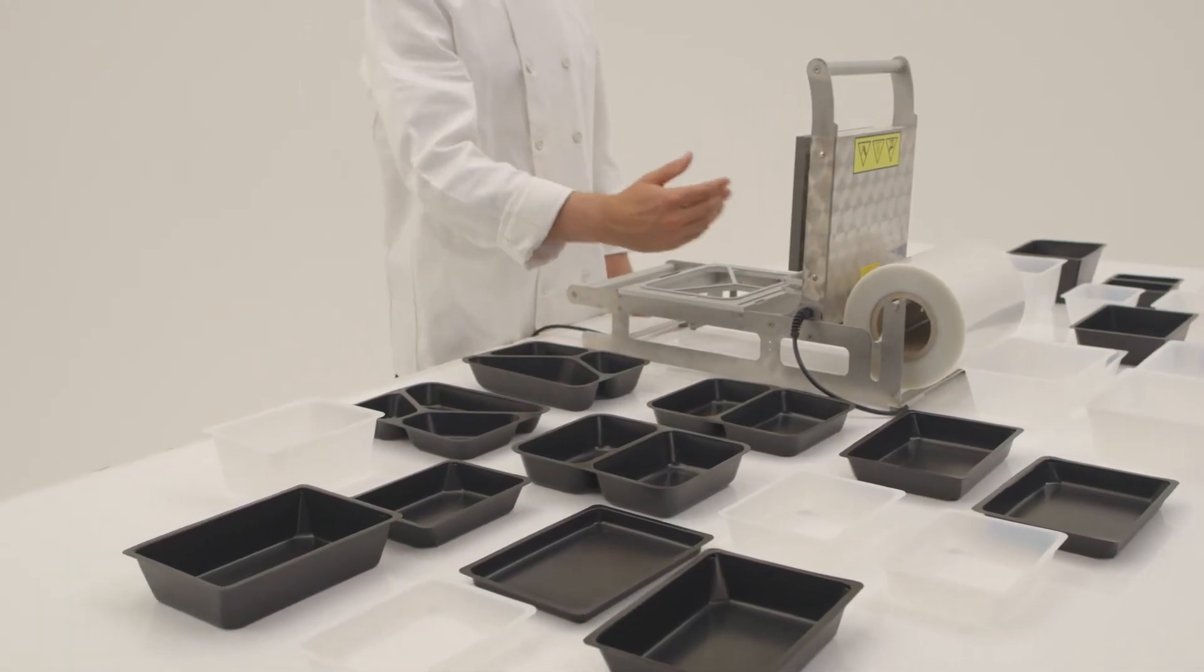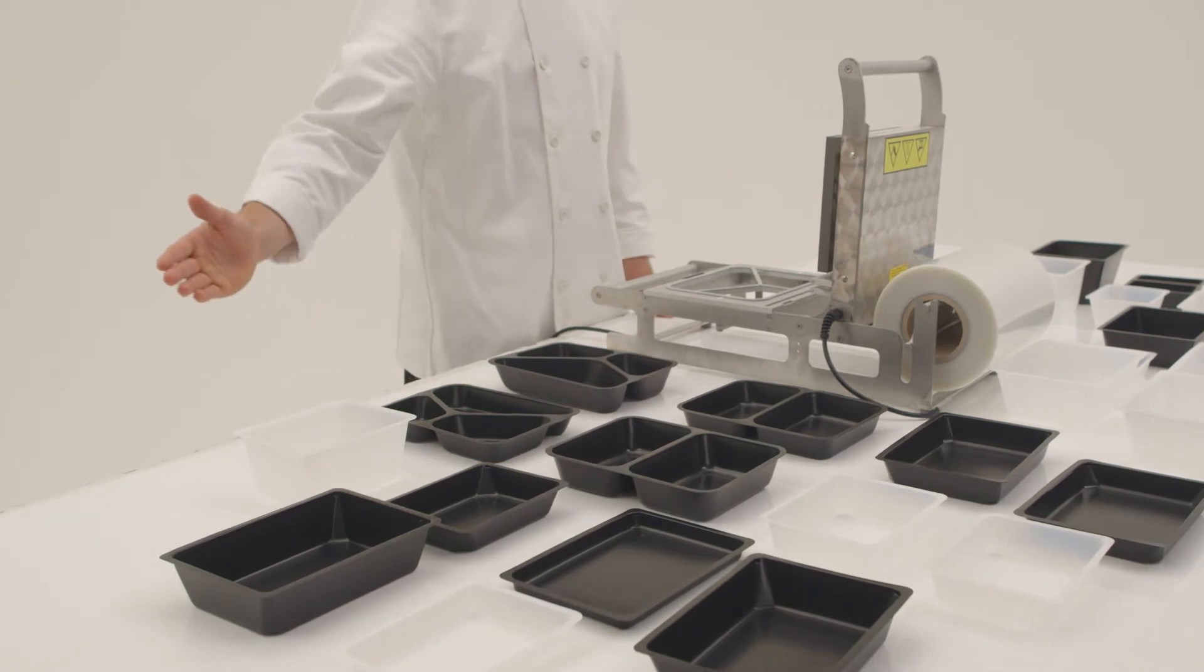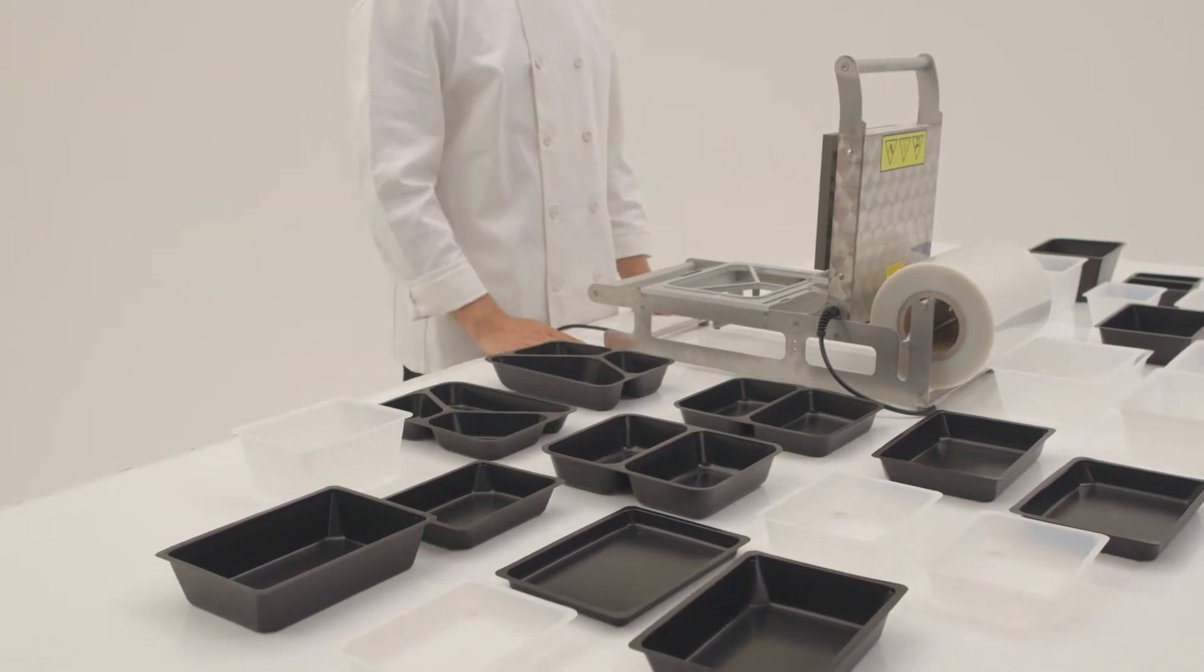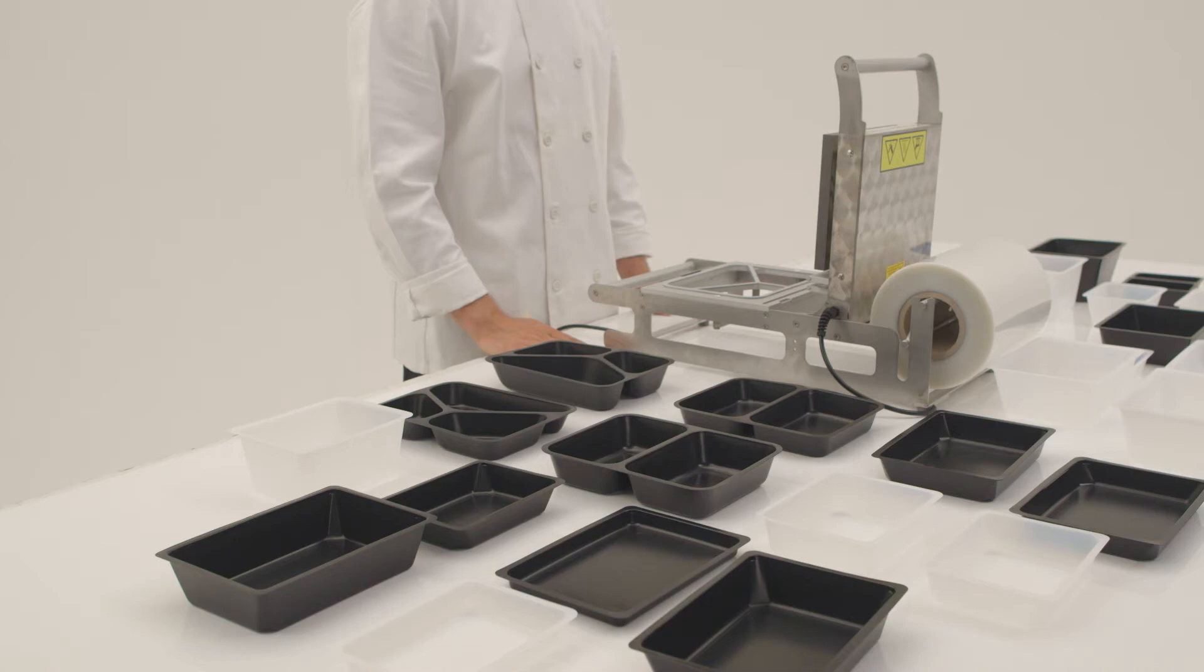The 539S machine can seal our range of group 3, 4, 6, and 8 trays, giving you a choice of 30 different tray sizes.